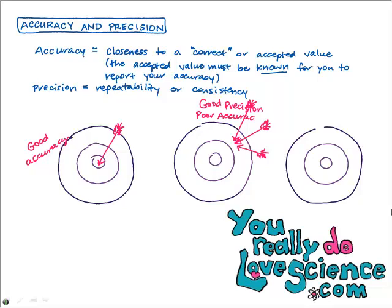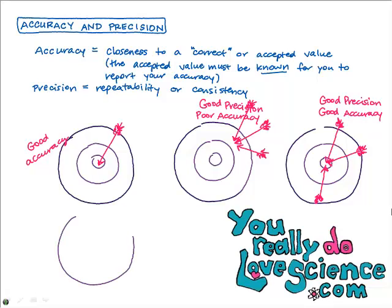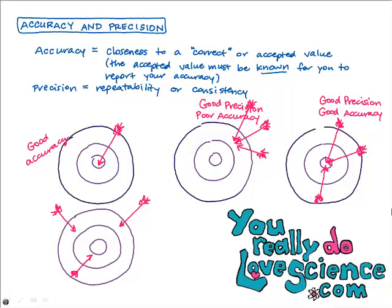I don't want to lead you to believe that good precision is always poor accuracy. So I drew a third dart board where we have good precision — good repeatability — and good accuracy. The darts are consistent, so that's good precision, and they hit the bullseye, so that's good accuracy. And then there's a fourth scenario with poor precision, where the darts are scattered all over the place. This is poor precision and also poor accuracy — you never really hit the bullseye.